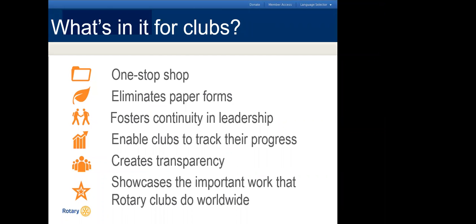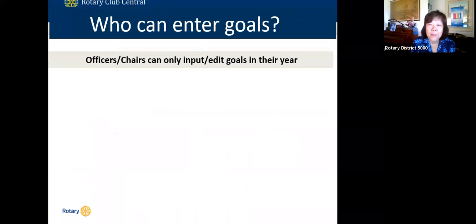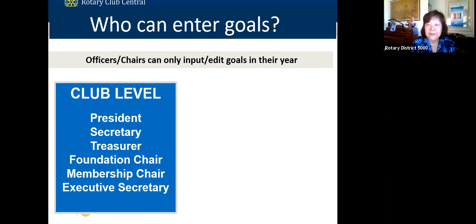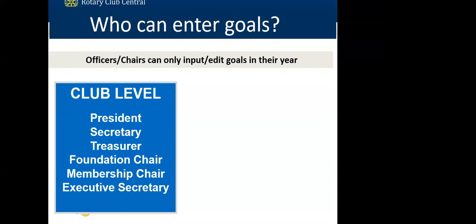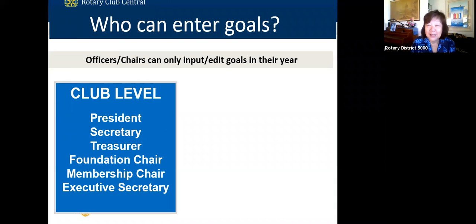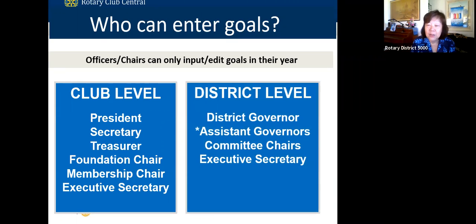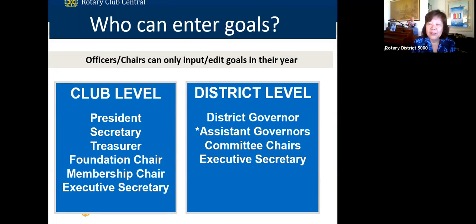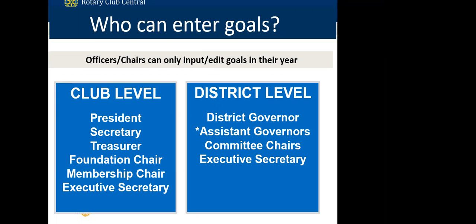It's really important to update that information and put your goals in. Who can input goals into Rotary Club Central? At the club level: the president, secretary, treasurer, foundation chair, membership chair, and the executive secretary. An executive secretary might be someone who handles all of the inputting and keeps up with reports. At the district level, the district governor, assistant governors, committee chairs, and the executive secretary can also edit and input goals — though assistant governors can only access the clubs in their area.